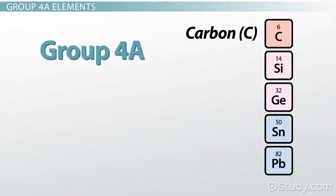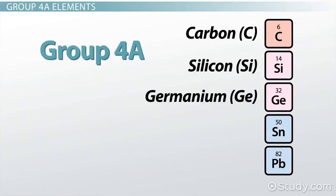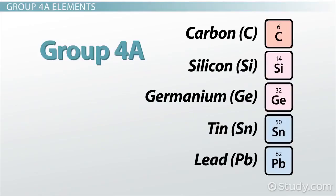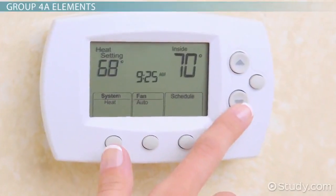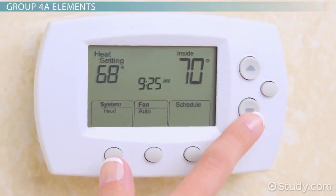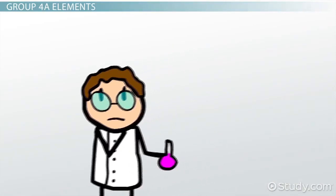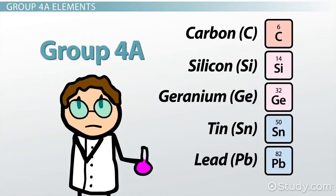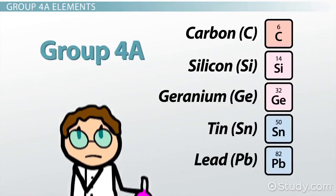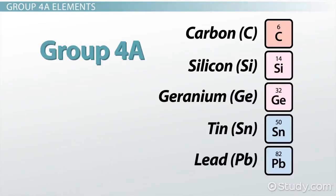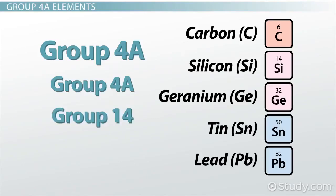Group 4A consists of carbon, silicon, germanium, tin, and lead, and is located on the middle right of the periodic table. All of these elements are solids at room temperature. Before we delve into the details of these important elements, let's get some terminology straight. Depending on the periodic table or textbook you're looking at, these elements can go by different names. You already know they can be called group 4A, but they can also be referred to as group 14 or group Roman numeral 4A. All mean the same thing.